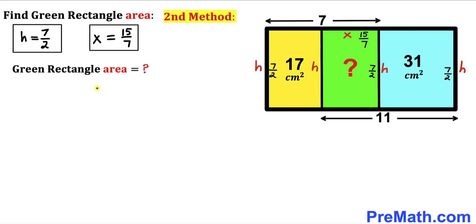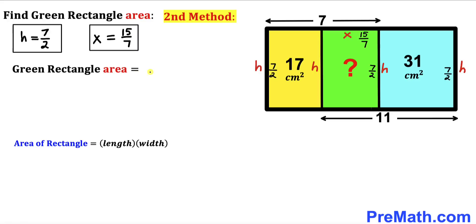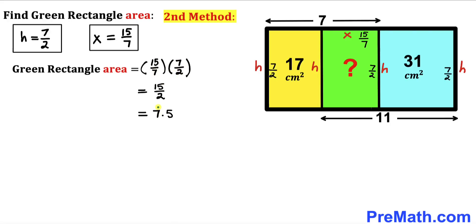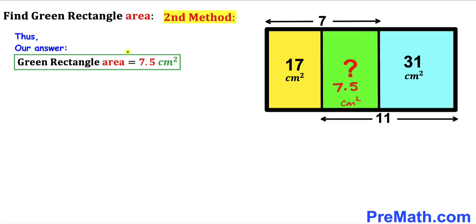Here's the final step: calculate the area of the green rectangle. With dimensions 15/7 and 7/2, the area is 15/7 × 7/2 = 7.5 cm². So the area of the green rectangle is 7.5 cm² by the second method as well. Thanks for watching and please don't forget to subscribe for more exciting videos.